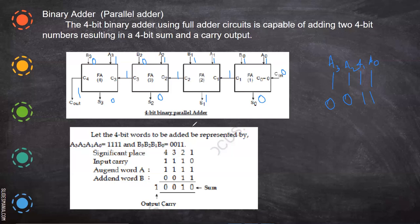When you want to add more number of bits, you simply use more full adders. Here we are adding two four-bit numbers, so we use four full adders. If you are going to add eight-bit numbers, then you need eight full adders.